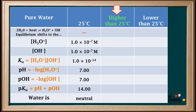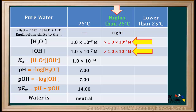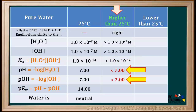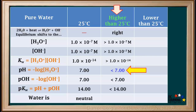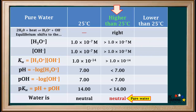Now we'll determine the ranges of these values if the temperature is increased above 25°C. The ionization equilibrium shifts to the right, making both hydronium and hydroxide ion concentrations greater than 1 × 10⁻⁷ M. So Kw is greater than 1 × 10⁻¹⁴. Because the hydronium and hydroxide concentrations are greater than 1 × 10⁻⁷, the pH and pOH will both be less than 7, and pKw will be less than 14. Because pH is less than 7, you might be tricked into thinking the water is acidic — but you cannot make this assumption if the water is not at 25°C. The hydronium and hydroxide concentrations are still equal to each other, and pure water at any temperature is neutral.